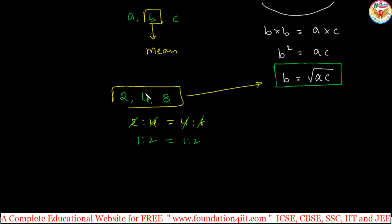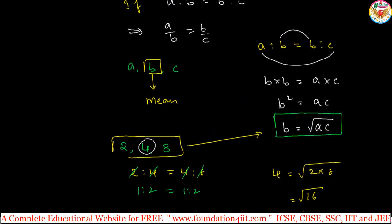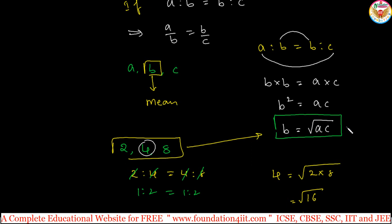Now applying the rule: the middle number 4 should equal the square root of the first and third terms. Square root of 2 into 8 is square root of 16, which is 4. So if instead of 4 we have 2, x, 8 in continued proportion, you can find x equals square root of 2 into 8. If A, B, C are in continued proportion then B equals square root of A times C.